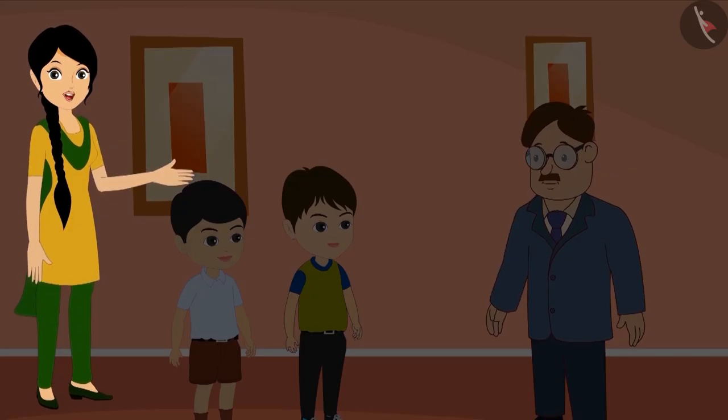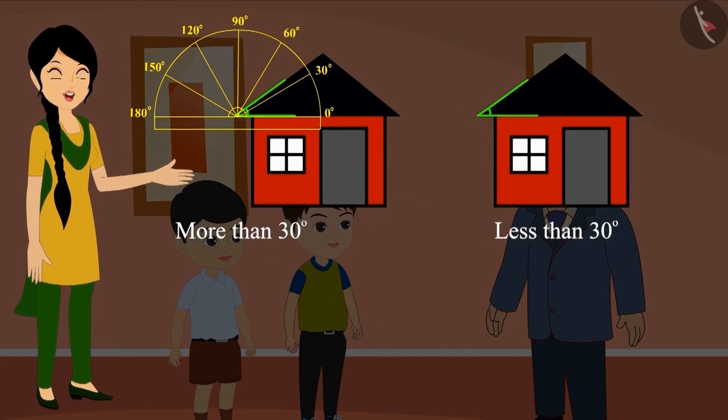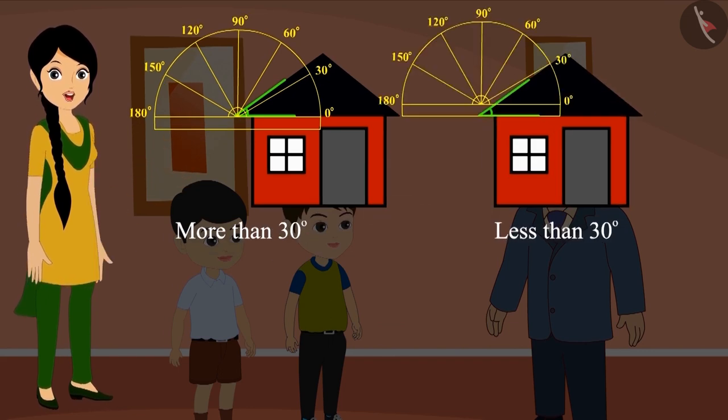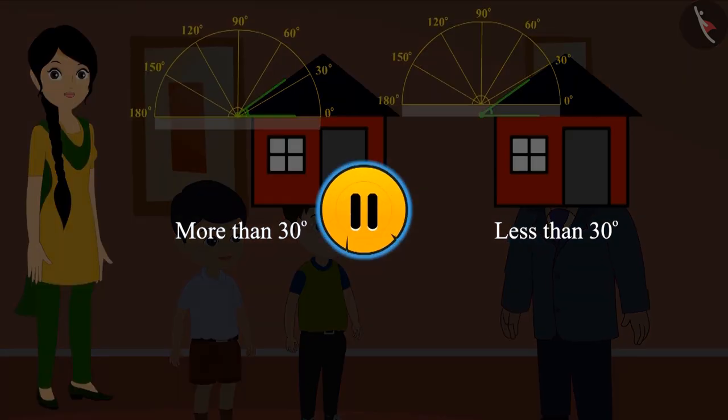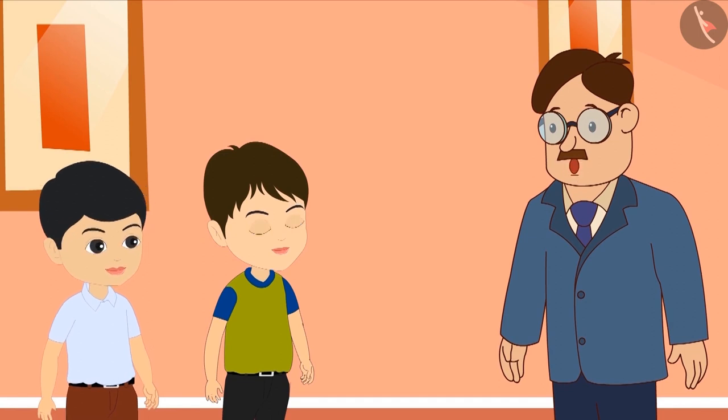Golu and Bholu showed their uncle the measurements of the angle. This time Bholu's measurement was more than 30 degrees and Golu's measurement was less than 30 degrees. Can you tell which answer is correct? If you want, you can pause the video here and think for a while. Bholu's answer is absolutely correct.